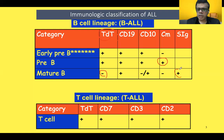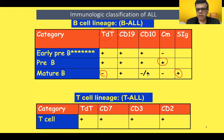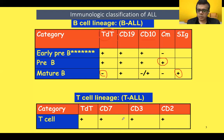Another key difference commonly asked in exams: cytoplasmic immunoglobulin is present only in the pre-B type, whereas surface immunoglobulin is present in the mature B type. The CD10 or CALLA antigen is present in early pre-B and pre-B forms. T cell ALL has TdT positivity along with T cell markers like CD2, CD3, and CD7.